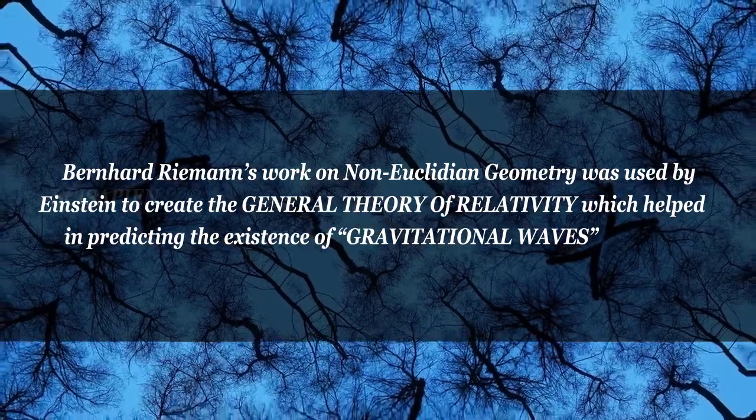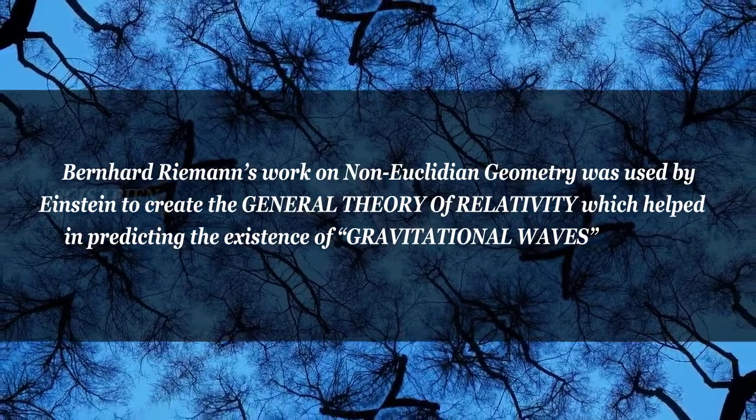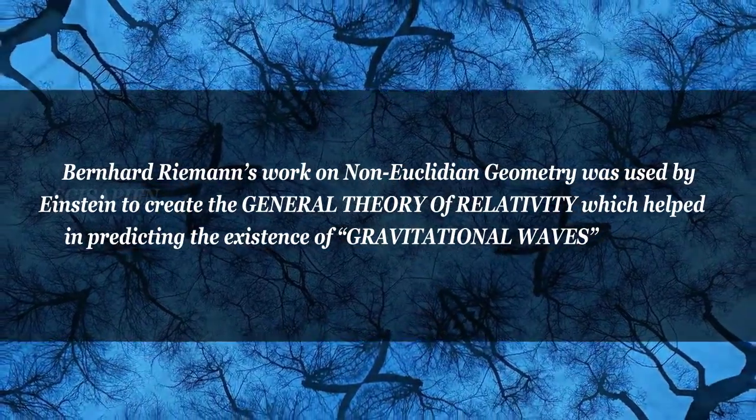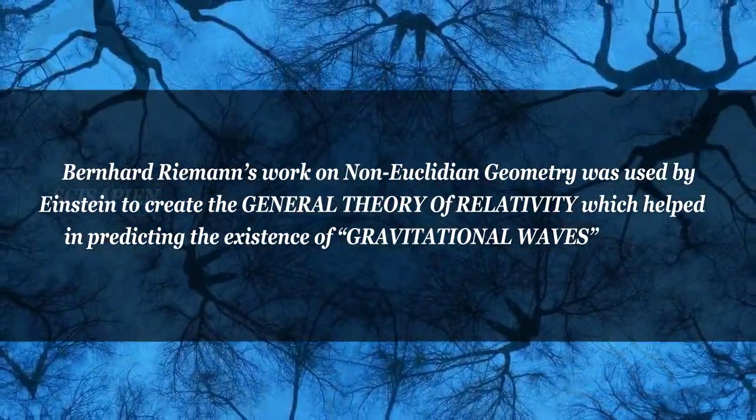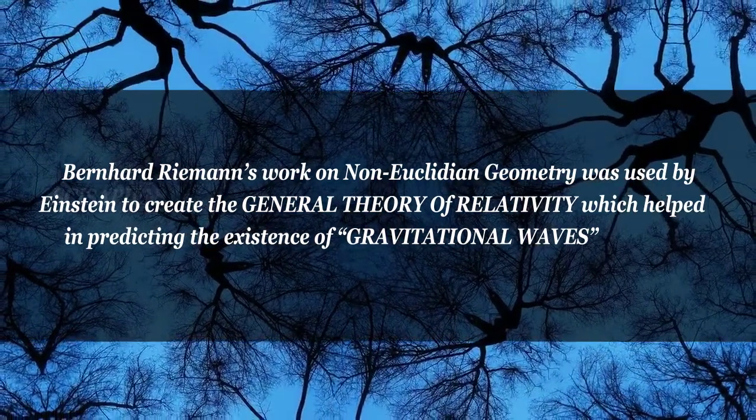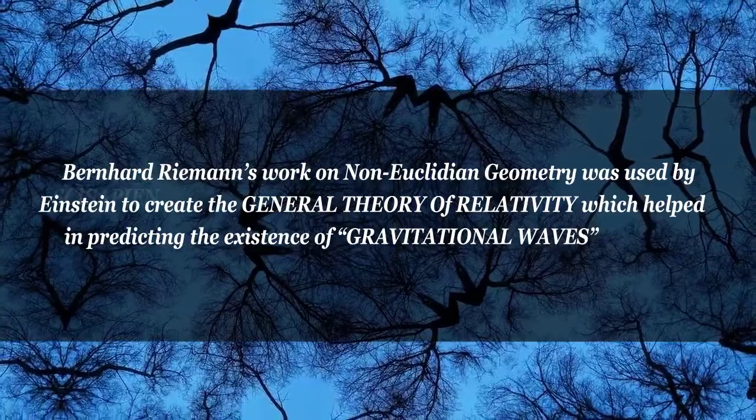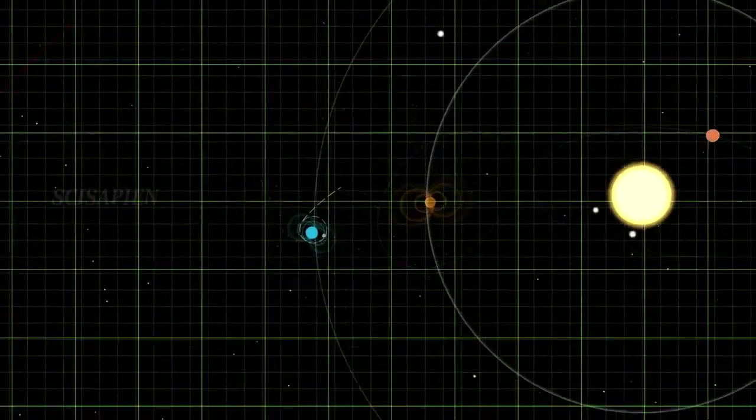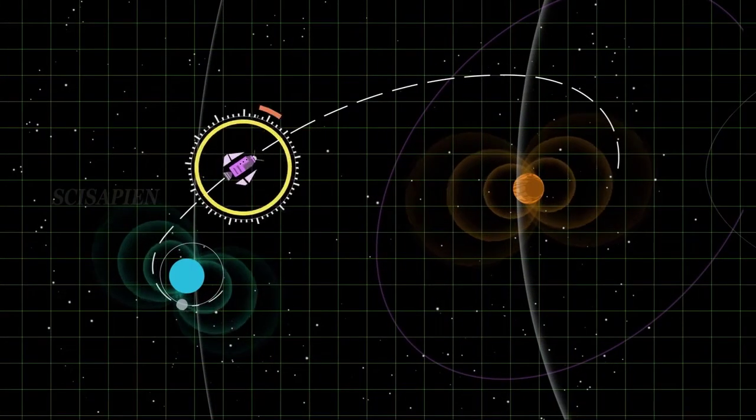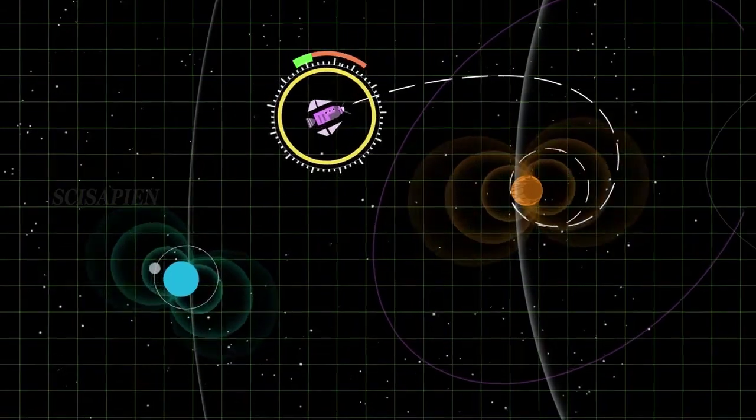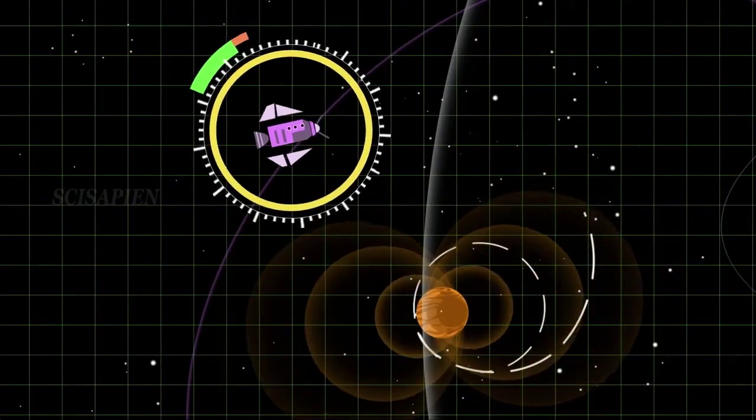Similarly, Bernhard Riemann's work on non-Euclidean geometry was used by Einstein to create the general theory of relativity which helped in predicting the existence of gravitational waves. And with recent technology, scientists proved that gravitational waves exist, which is again intrinsic in nature.